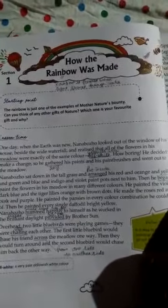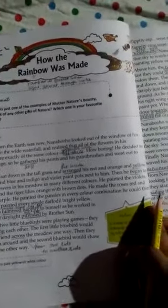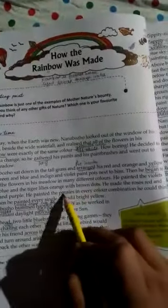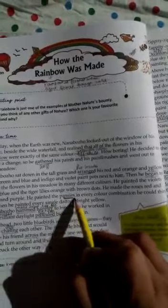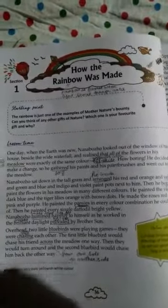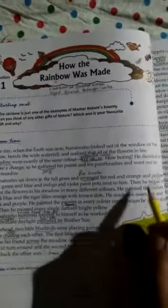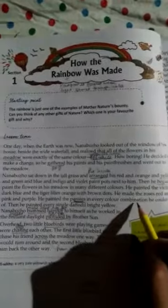He painted the pansies in every color combination he could think of. The pansies are flowers. He painted the flowers with each color. It means the combination of color contrast. It looks good.